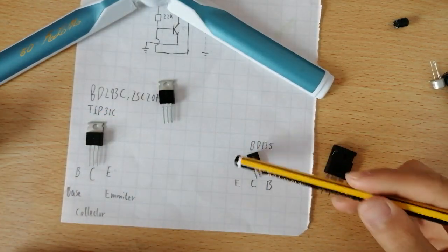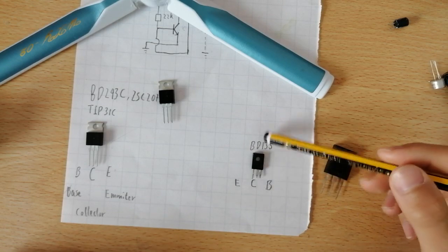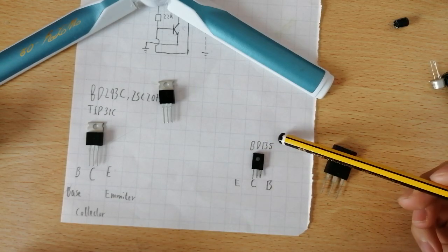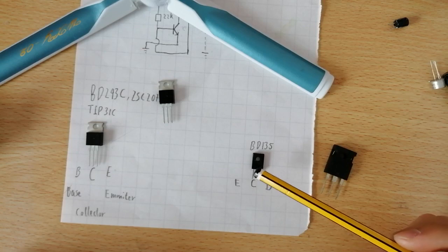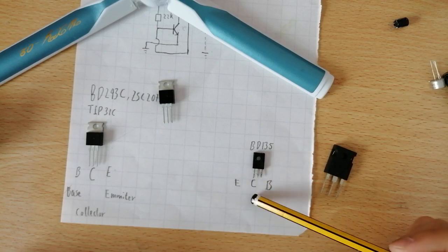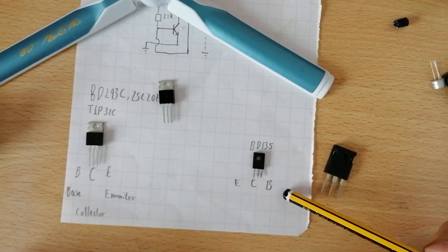Now for another common type of NPN transistor, you can use BD-135, where the first pin is emitter, center pin is collector, and the last pin is base.